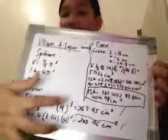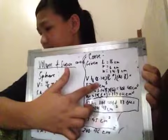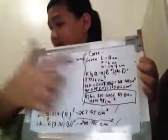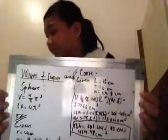The LSA is 3.14 times 6 times 16 equals 301.44 cm squared.